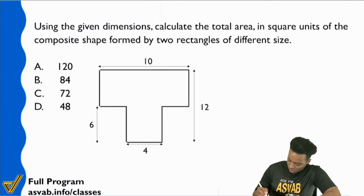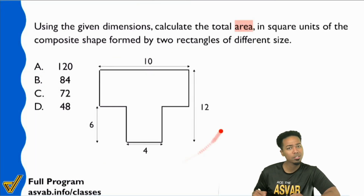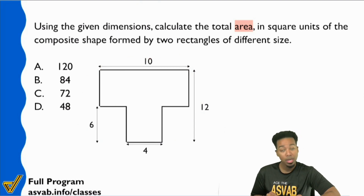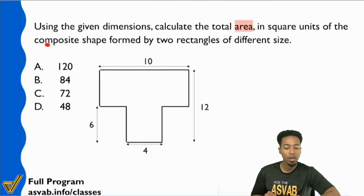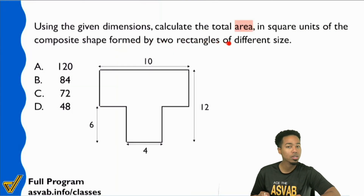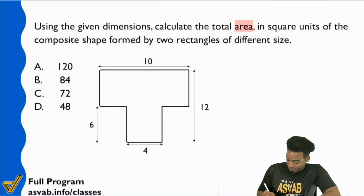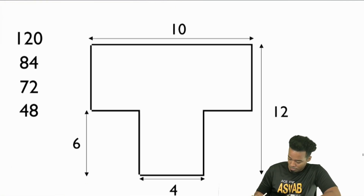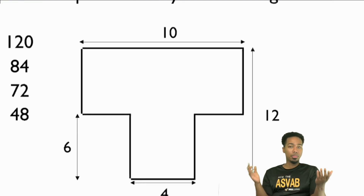Let's highlight that and just read what it says. We've got this picture right over here, and the directions are: using the given dimensions, go ahead and calculate the total area in square units of the composite shape formed by two rectangles of different size. All they're trying to say is: a composite figure, something that's composite, is made up of more than one thing.